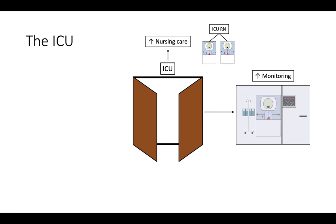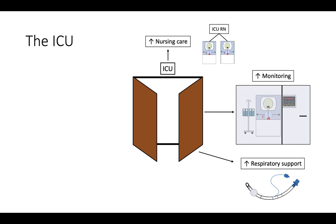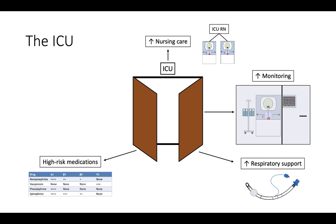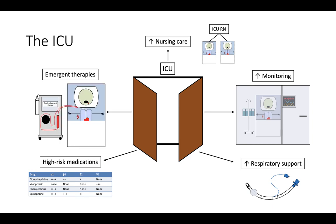The ICU also allows for increased levels of respiratory support. Patients with unstable respiratory status require ICU-level care. In the ICU, patients can receive heated high-flow nasal cannula, non-invasive positive pressure ventilation, and invasive mechanical ventilation. Patients can also receive high-risk medications that require minute-by-minute monitoring and adjustment. Examples include vasopressors, inotropes, sedation, and analgesia. Finally, patients in the ICU can receive urgent or emergent therapies, including emergent renal replacement therapy, endoscopy, and bronchoscopy.